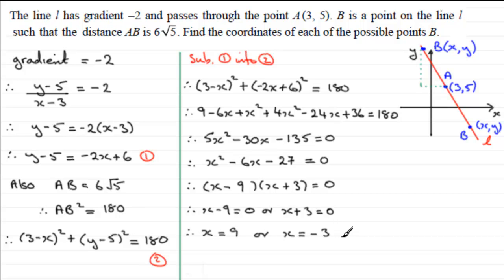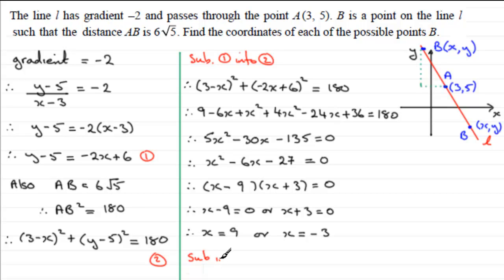So I've got my x coordinates. They look good: the x coordinate of minus 3 is to the left of the x coordinate of A (which is 3), and x equals 9 is to the right of 3 — so that's consistent with the diagram. I'm going to substitute these values into equation 1.